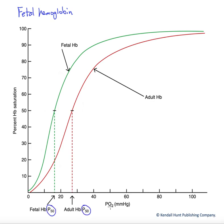P50 is the partial pressure of oxygen at which our hemoglobin is 50% saturated. As we can see, our fetal hemoglobin reaches 50% saturation at a lower partial pressure of oxygen than our adult hemoglobin. This indicates a higher affinity.